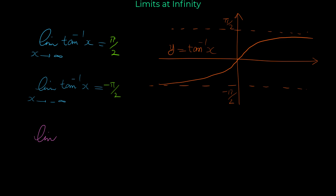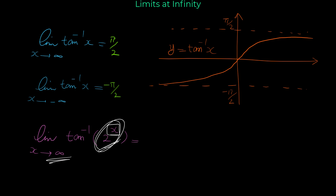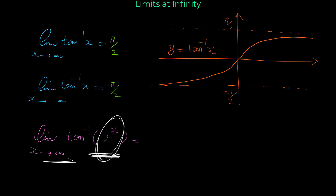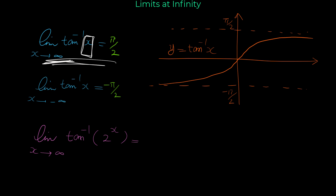Now look at this example: what is the limit of tangent inverse of 2 to the power of x when x approaches infinity? When x approaches infinity, the exponential function 2 to the x also goes to infinity. So inside the bracket we have an expression that approaches infinity, and we know that when the argument goes to infinity, tangent inverse approaches pi over 2. So this limit is pi over 2.